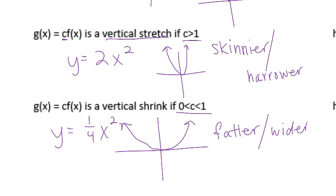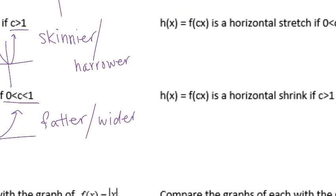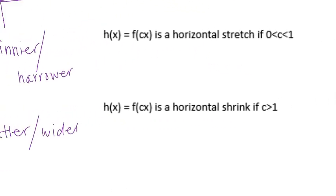So these are all vertical transformations. Vertical stretch makes it narrower — the number is greater than 1. Vertical shrink makes it wider — the number is a fraction.